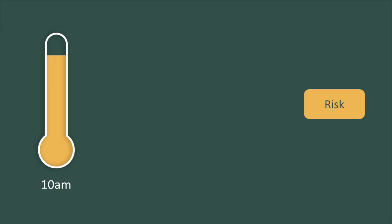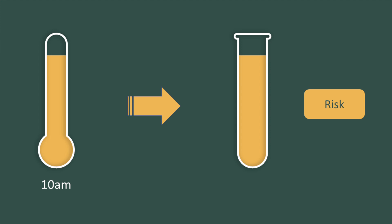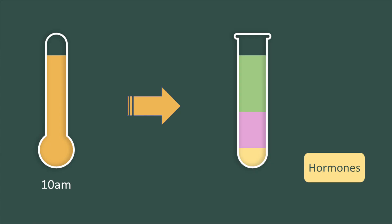Let's come back to our risk meter at 10 am. We transfer its content to a test tube to get it analyzed. This will tell us how much of which risk factors were exposed to at 10 am. In yellow, hormonal risk. In pink, stress. And green is weather.